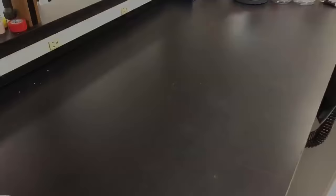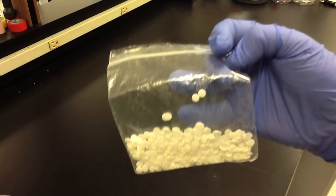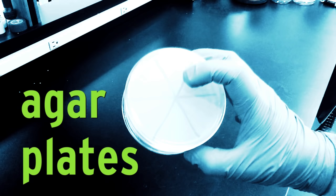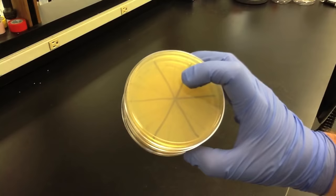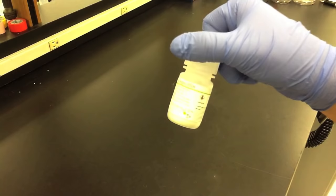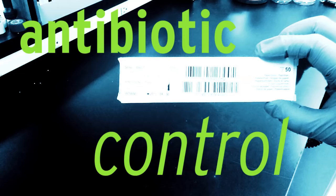You will need 6 millimeter filter paper discs, sterile petri dishes, agar plates with no added antibiotic, sensitive and resistant bacterial cultures, an antibiotic to test, and an antibiotic control.